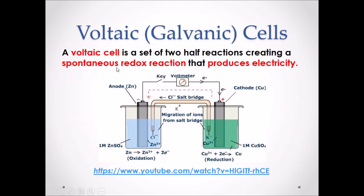A Voltaic Cell is a set of two half reactions creating a spontaneous redox reaction that produces electricity. The purpose of this cell is to transfer electrons from one beaker through an external wire to another beaker. This transfer of electrons produces electricity, which is typically recorded by a voltmeter.